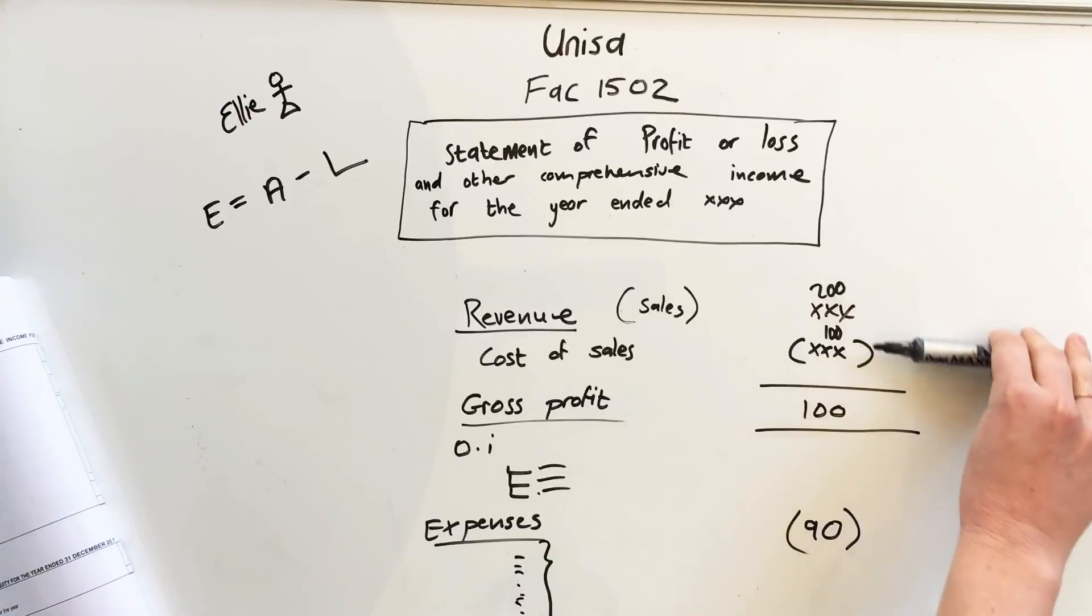Revenue minus cost of sales gives you a gross profit. Gross profit, all your other incomes like rental income, interest on investments, whatever other. It'll be small amounts. There has to be a total here again, but don't worry about it too much.